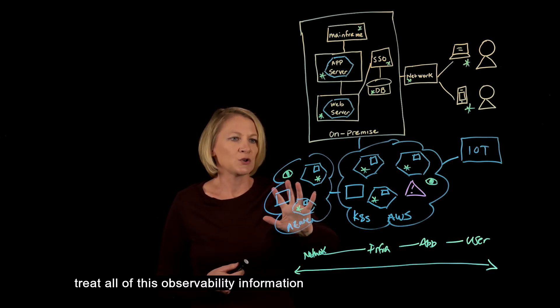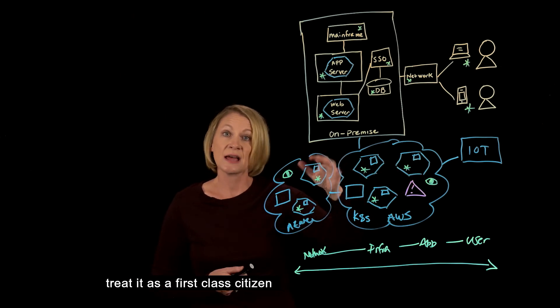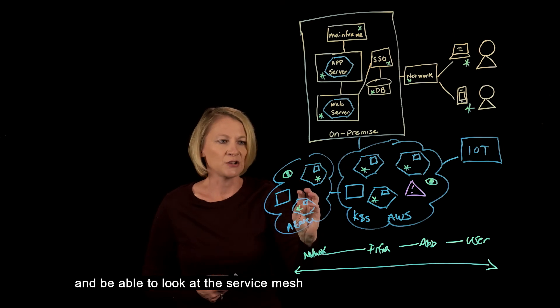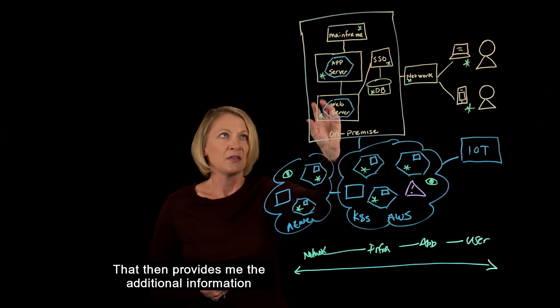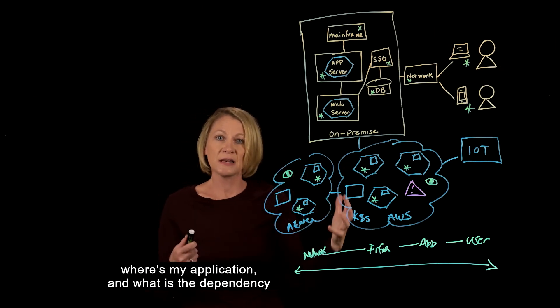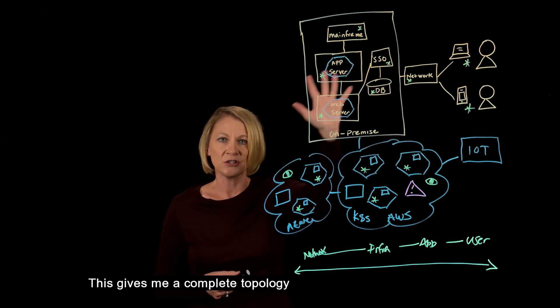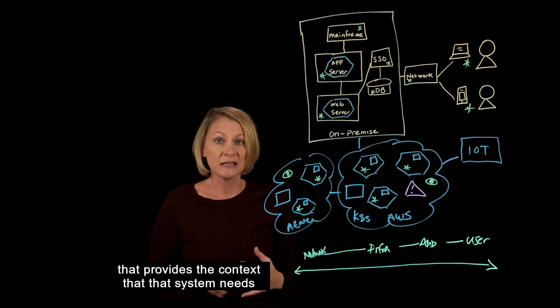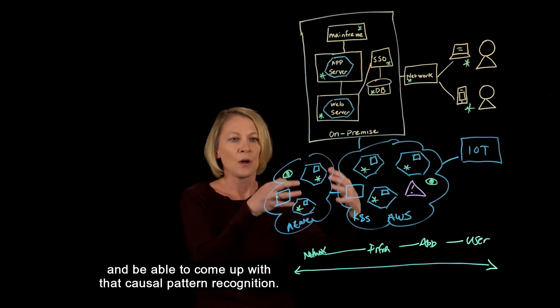So what we want to do is treat all of this observability information that we're collecting from this microservices architecture as a first-class citizen within our data model, and be able to look at the service mesh for the communication between the various different endpoints. That provides me the additional information I need to determine where is my nodes, where is my application, and what is the dependency and relationship between those various different components. This gives me a complete topology that I can put into an AI system that provides the context that system needs to draw those relationships and come up with that causal pattern recognition.